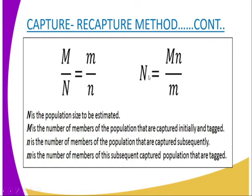Capital N, representing the total population, is calculated as follows: capital M (the number initially captured and tagged) multiplied by small n (the number subsequently captured), divided by small m (the number of the subsequently captured population that are tagged). Having done that, you will get an estimate of the total population in the area that you are studying.